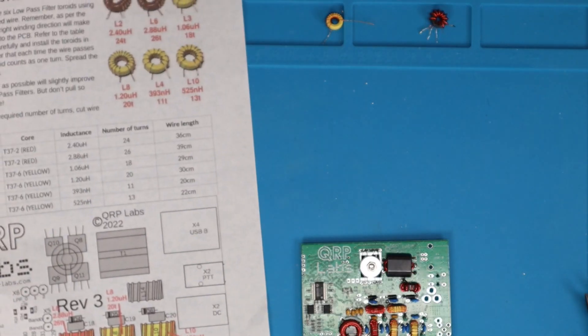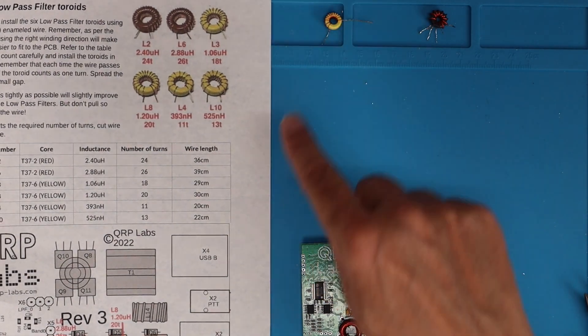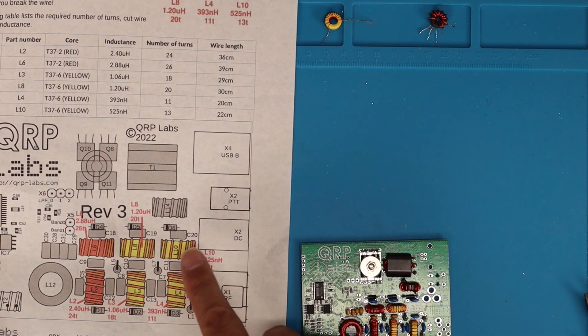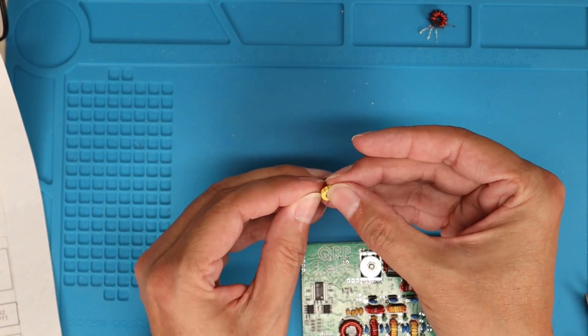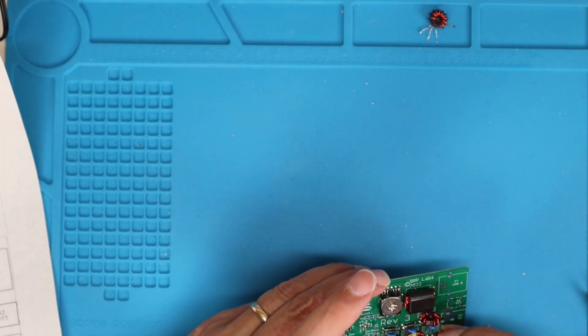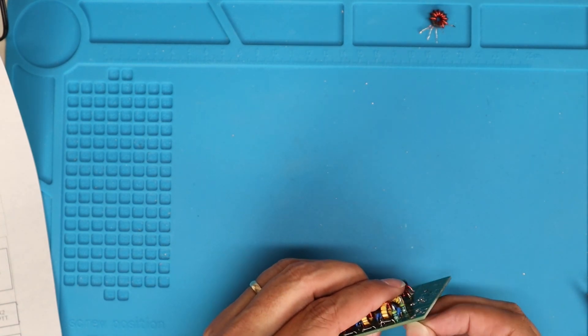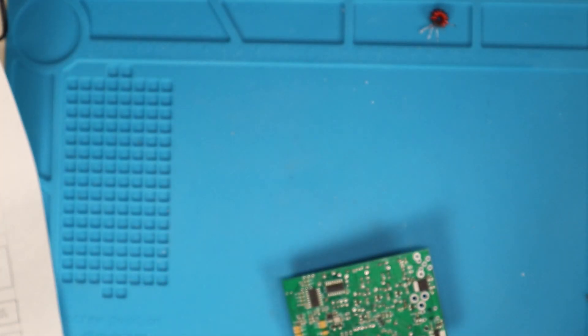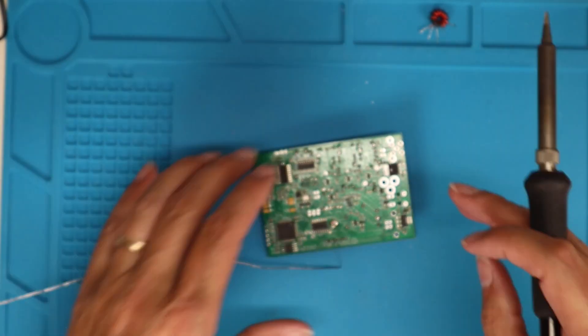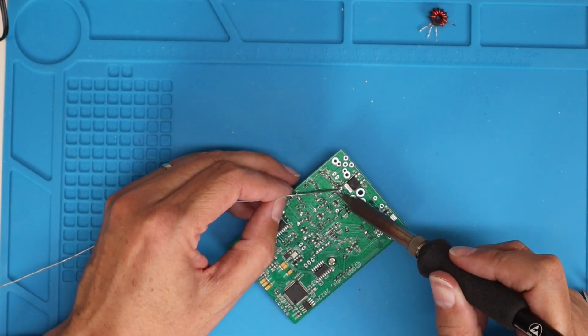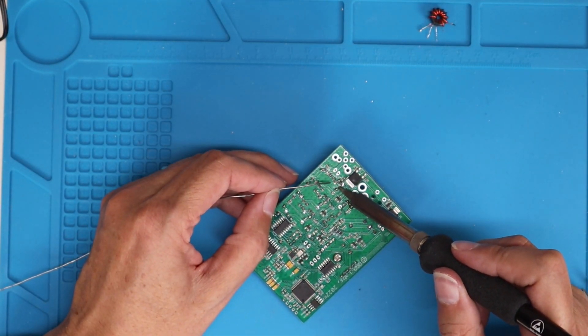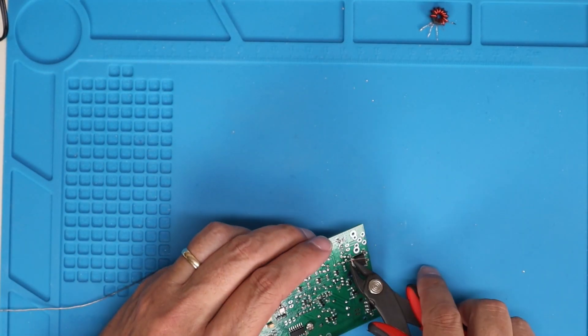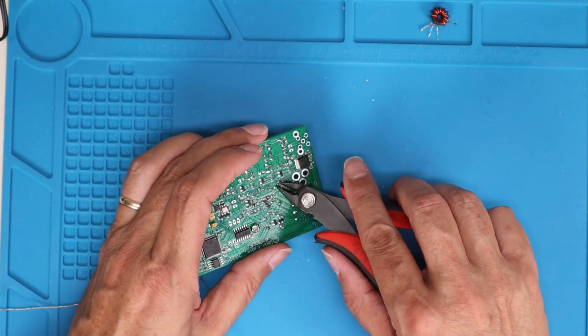And the final inductor for our low-pass filters is L10, which is also for 20 and 30 meters, and it is a 525 nanohenry inductor. One last point of interest is the diodes D6 and D3, in the case of the low-pass filter for 30 and 20, are the pin diodes that actually switch in each of these low-pass filter networks. So that's how each of these gets turned on and brought into the circuit.